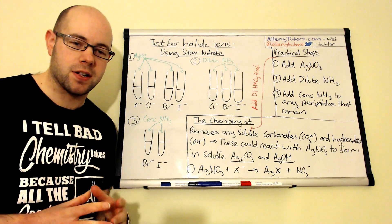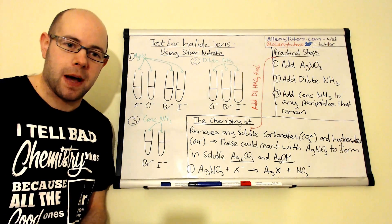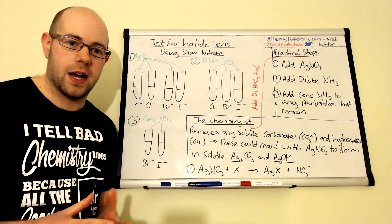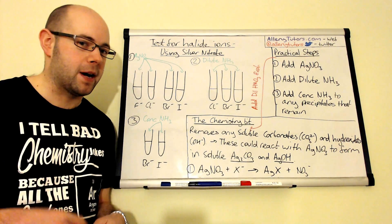Halides are basically halogens that have gained an extra electron to form F minus or Cl minus, Br minus ions, etc.